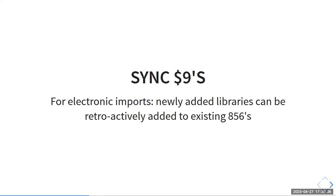Syncing the $9. For electronic imports — and this tool works with any mark records, but it also has special cases for electronic records — it will retroactively add to existing 856s. So if you're importing electronic records on a regular basis and then suddenly have a new library that wants to be part of that record set, you just add them to the config and run the sync, and it'll go back through the Evergreen database and retroactively add their $9 to the 856 so they're in the scope search.